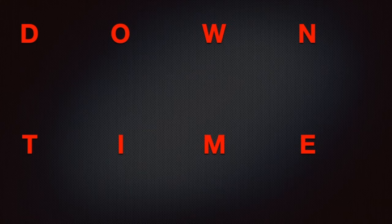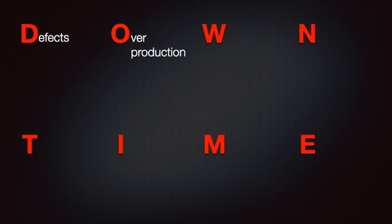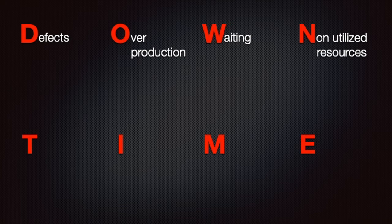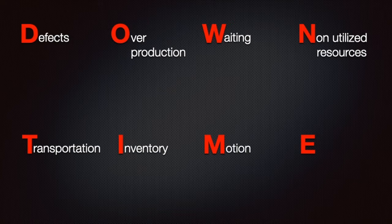When defining all forms of waste, I like to use the acronym DOWNTIME. That helps me remember what the eight different wastes are. So let's start. Defects, overproduction, waiting, non-utilized resources or talent, transportation, inventory, motion, and extra processing. These represent all the forms of waste.